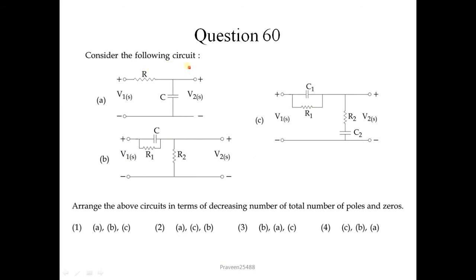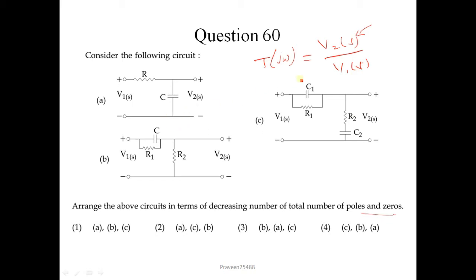Question number 60. Consider the following three RC circuits. Arrange the circuits in terms of decreasing total number of poles and zeros. We can find the transfer function T(s) = V2(s)/V1(s), where zeros appear in the numerator and poles appear in the denominator. The decreasing order is C, B, and A. The fourth option is the correct answer.